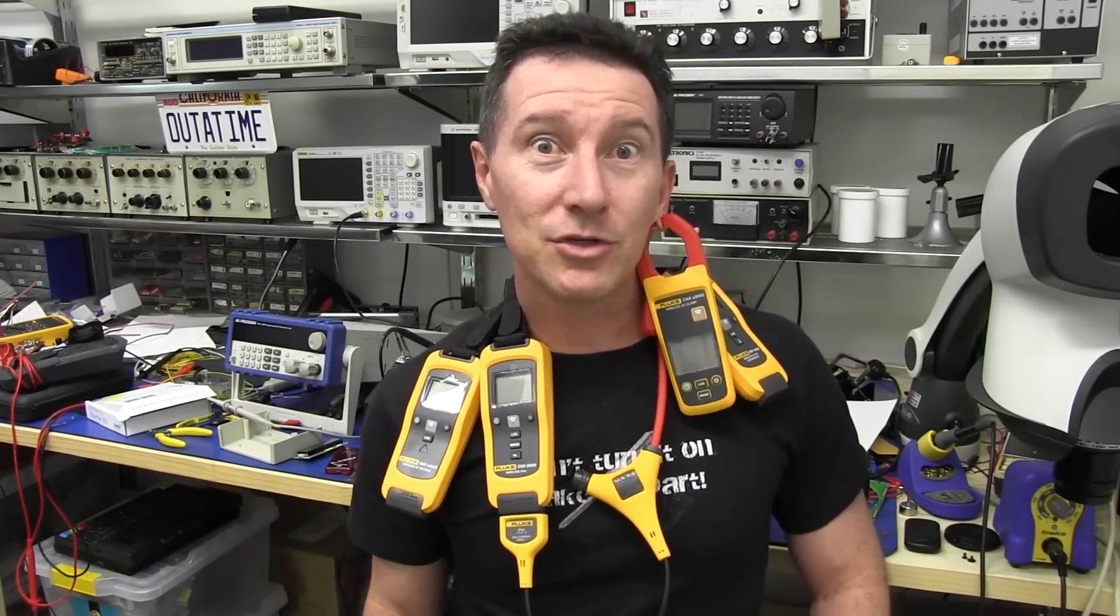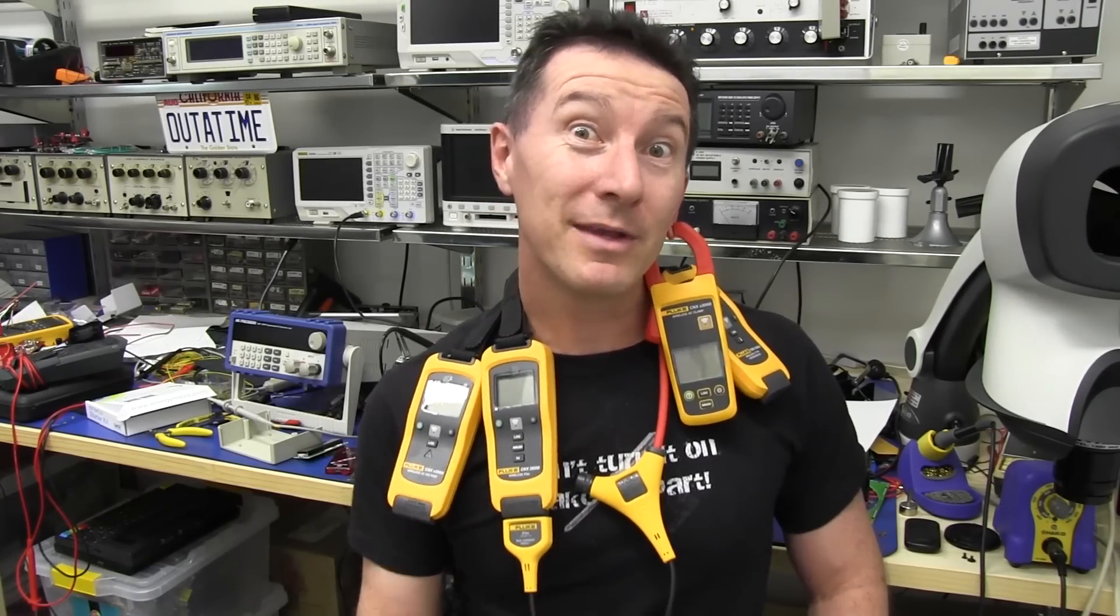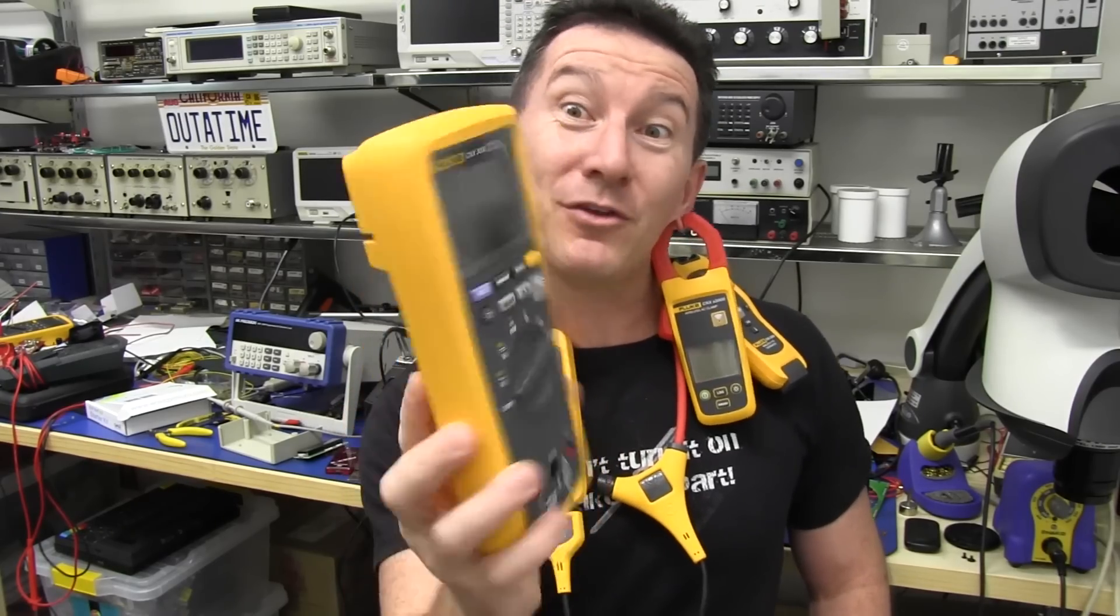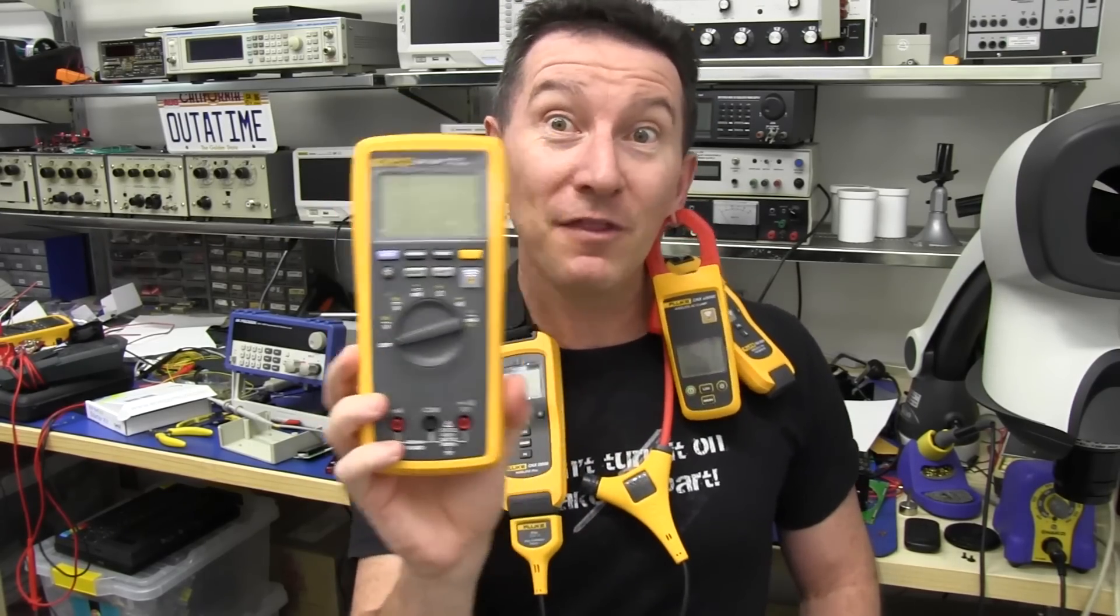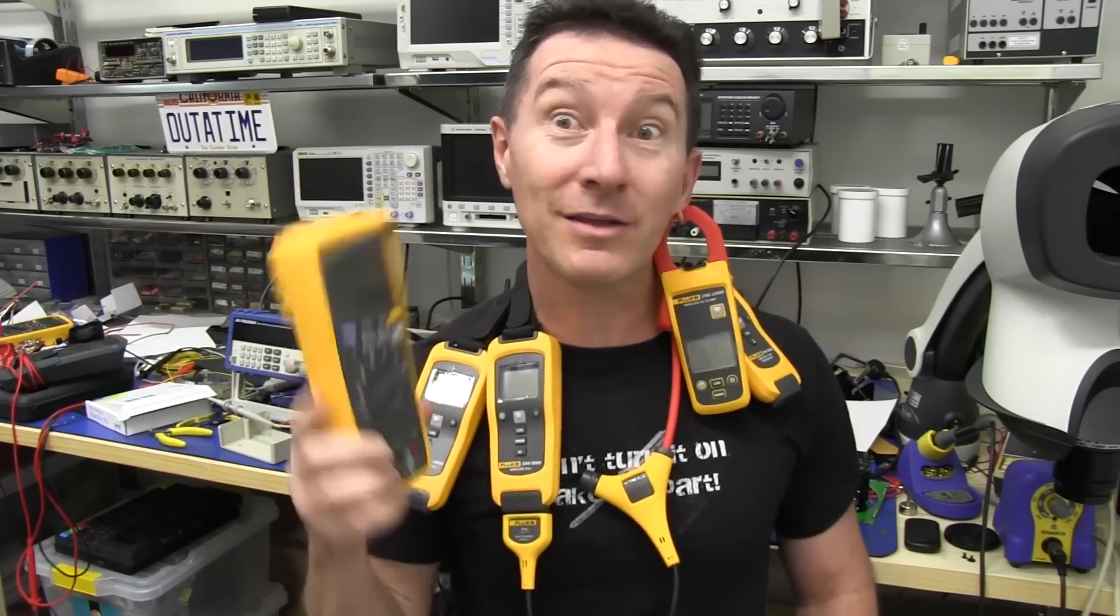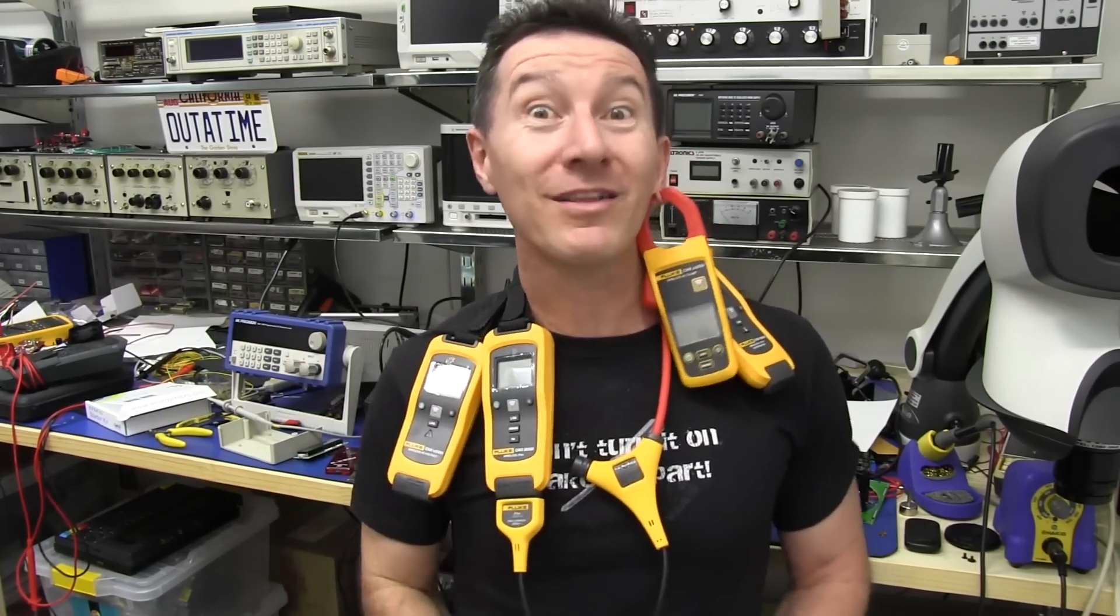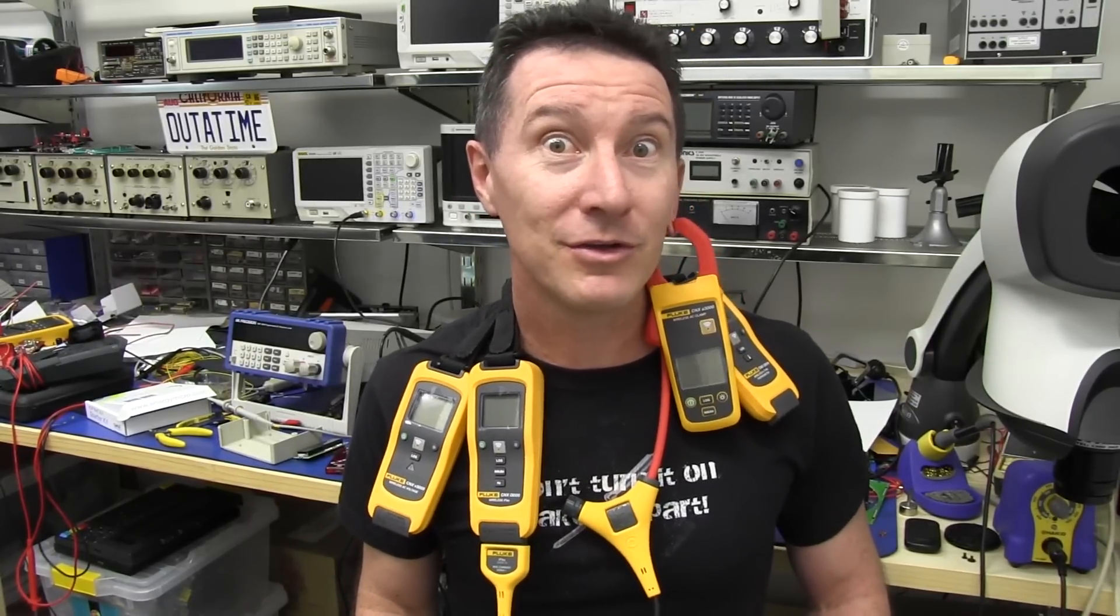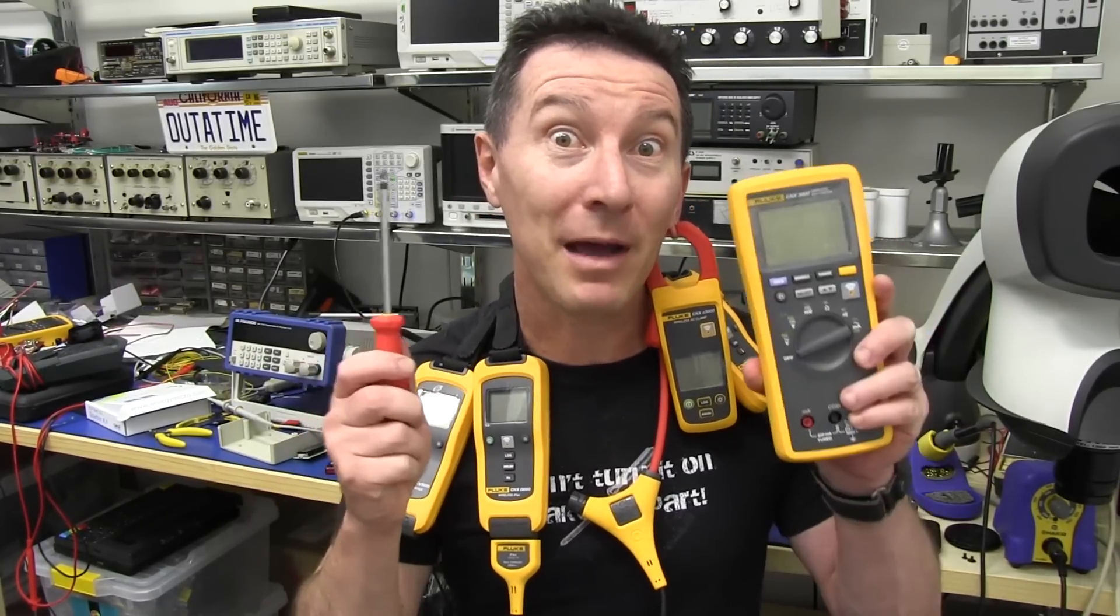Hi, welcome to Teardown Tuesday. It's not every day we get to tear down a Fluke multimeter. But yes, we've got one, the new CNX 3000, and it's wireless. So we've got all the wireless attachments. We've got five items. Can you believe it? You know what we say here on the EEV blog, don't turn it on, take it apart.